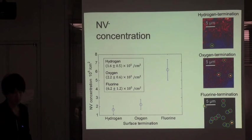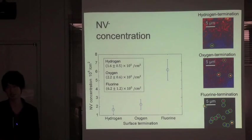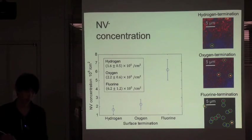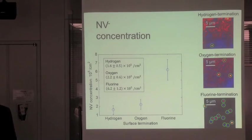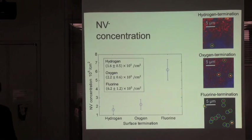We concluded that in O and F termination, we have a chance to see NV minus closer to the surface compared to hydrogen termination. That's why NV minus concentration was increasing.